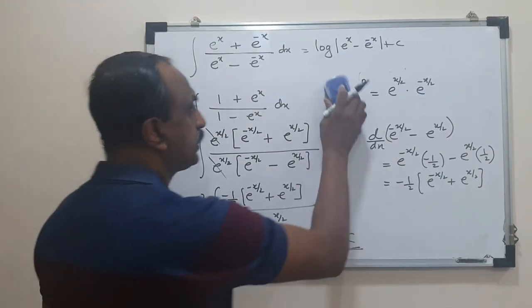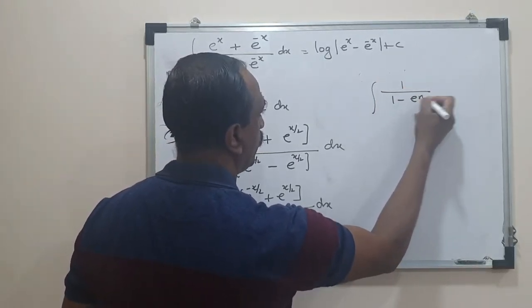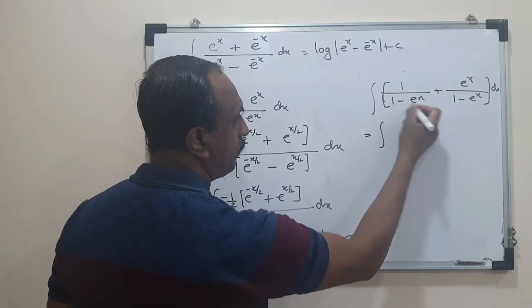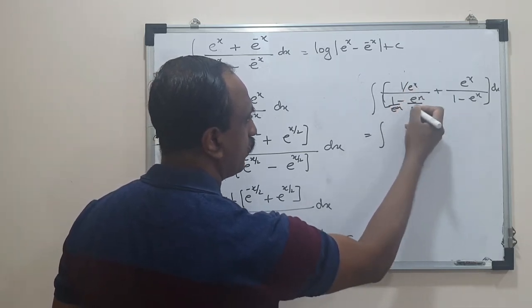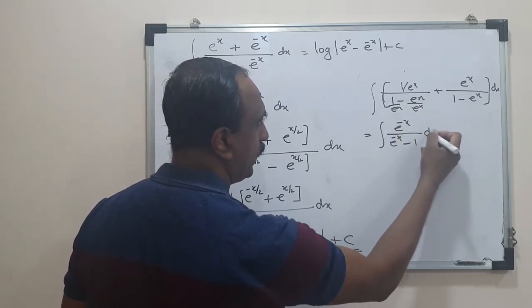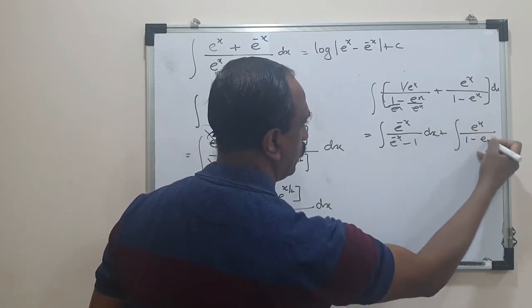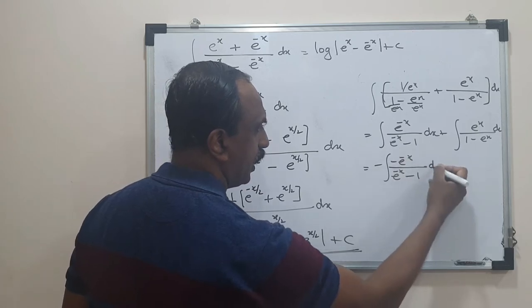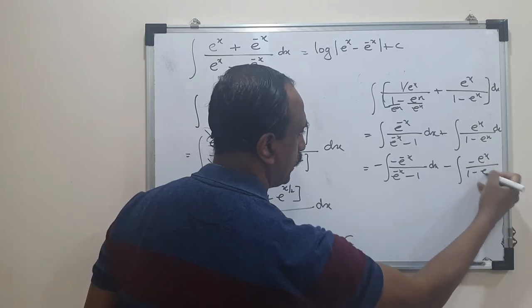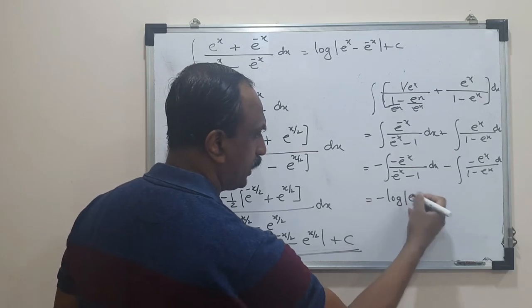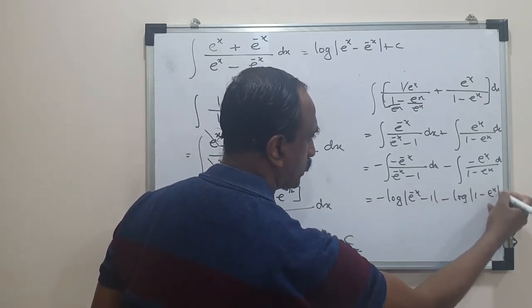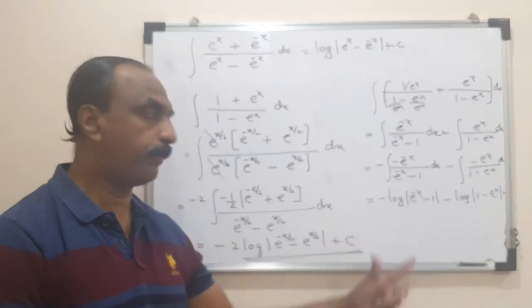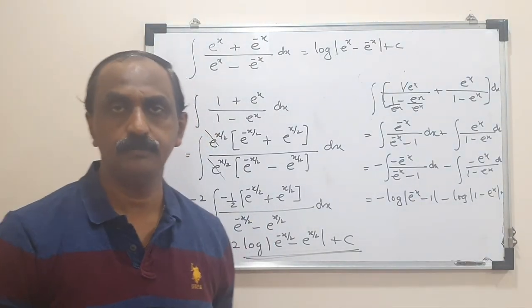Alternatively, separate (1+eˣ)/(1-eˣ) as 1/(1-eˣ) plus eˣ/(1-eˣ). For the first part, divide numerator and denominator by eˣ, getting e⁻ˣ/(e⁻ˣ - 1). Insert a minus sign so the denominator's derivative matches the numerator. For the second part, -eˣ/(1-eˣ) has the denominator's derivative as numerator directly. The final answer is -log|e⁻ˣ - 1| - log|1 - eˣ| + C. Both methods give the same result — they are equal by properties of logarithms.